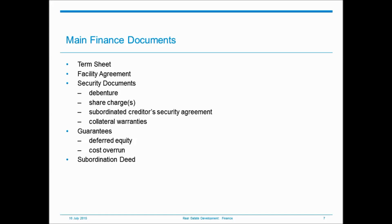There are of course a wide variety of other documents which might be part of any deal structure — for example, different types of guarantee such as completion guarantees, interest shortfall guarantees, or even straight financial guarantees of some or all of the loan. And where there are hedging arrangements — perhaps imposed by the bank — that brings a whole additional set of documentation.